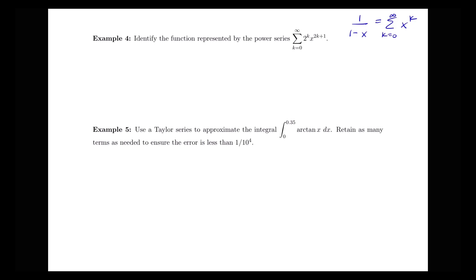It looks like we have several things being raised to some sort of power, so maybe we can rewrite what we have in our series as some sort of sum of something to the k. We notice that first we can rewrite x to the 2k plus 1 as x times x to the 2k. So we have x, and then we have 2 to the k and x to the 2k.